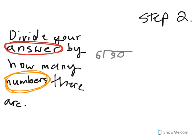Alright, so now, here's step 2. Divide the answer by how many numbers there are. So, we got 90 for an answer, right? So, let's divide 90 by 6.